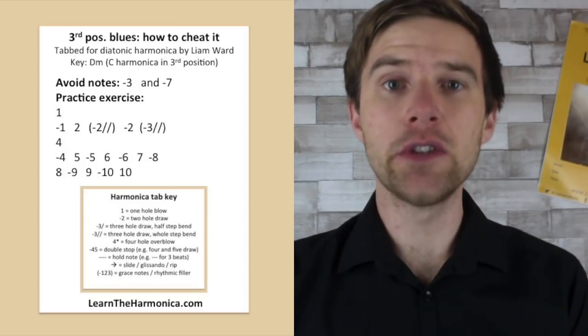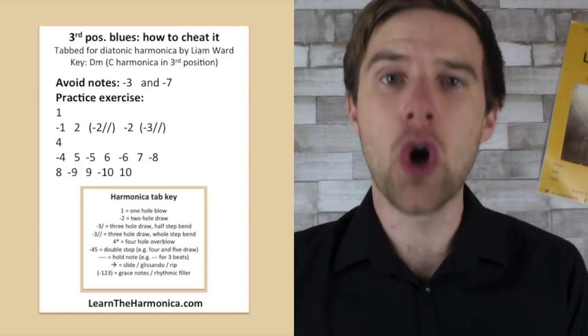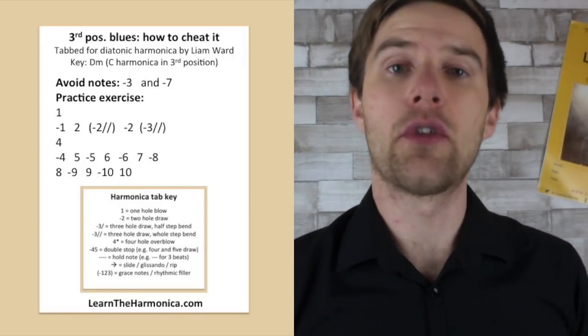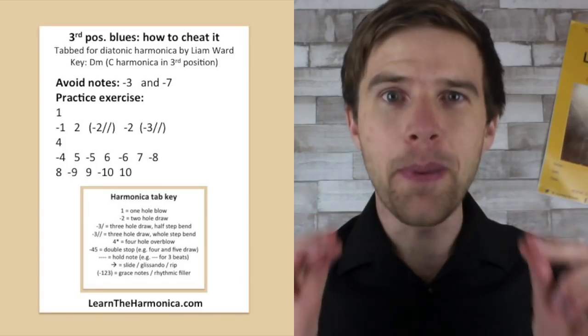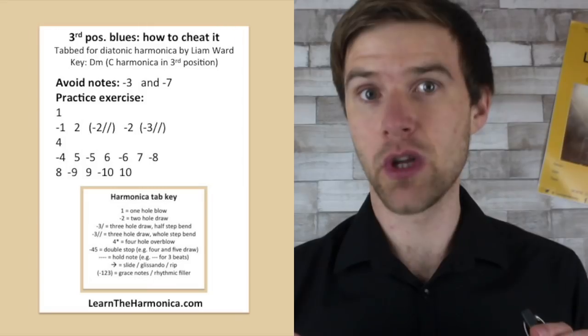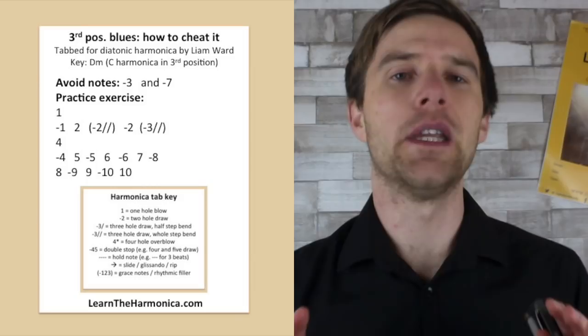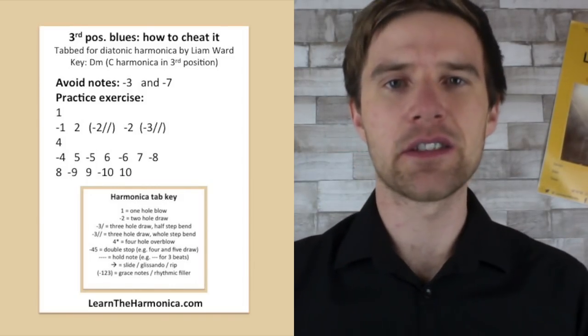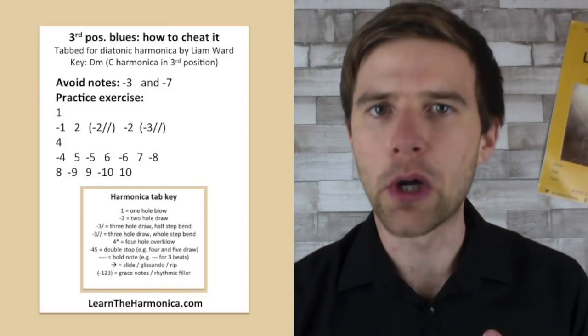Today we're not talking so much about which notes to play as we are about which notes not to play. We have avoid notes and our avoid notes are three draw and seven draw. The basis of this trick is really down to just avoiding those notes. You can play any other notes on the instrument, but don't play the three and the seven draw, and that will give you a very quick way into sounding like a minor blues third position harmonica player.